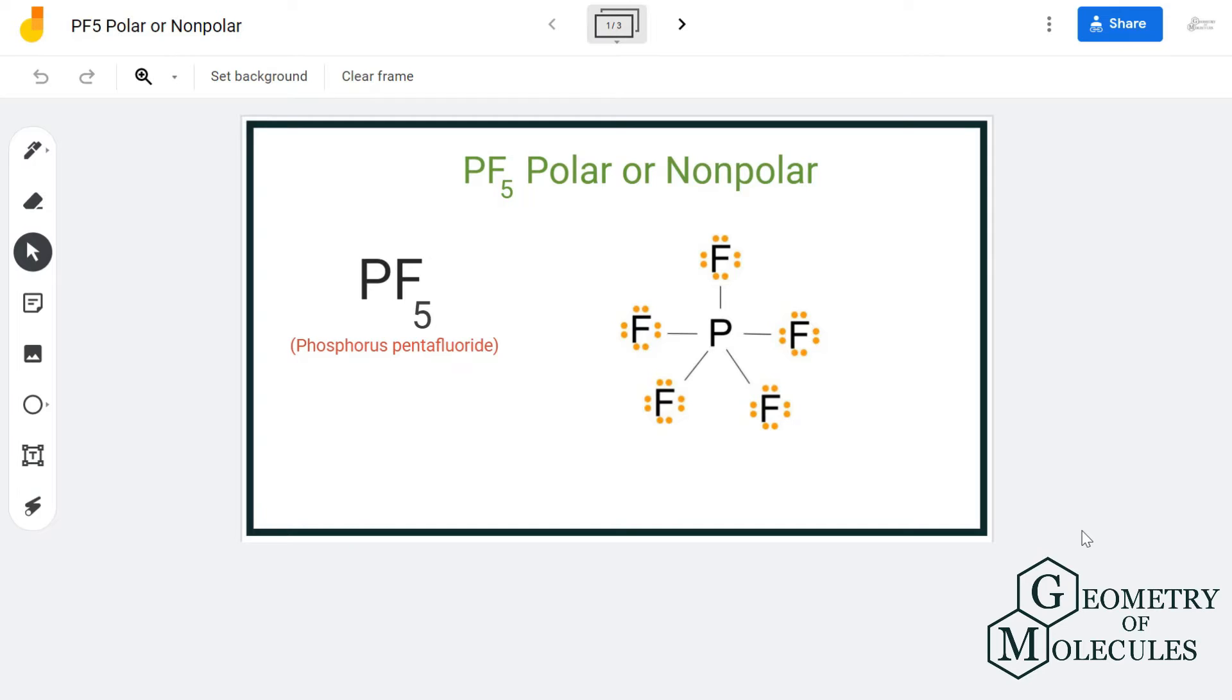Hi guys, in this video we are going to determine the polarity for PF5 molecule. It's a chemical formula for phosphorus pentafluoride and it is made up of one phosphorus atom and five fluorine atoms. To determine its polarity, we will first look at its Lewis structure and its shape.